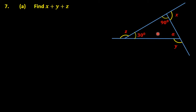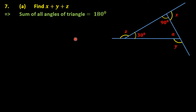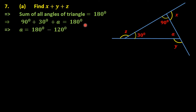Our first task is to find the third interior angle, which we represent as a. The polygon has three sides, so it is a triangle. Using the angle sum property of a triangle — the sum of all angles equals 180 degrees — we write 90 plus 30 plus a equals 180 degrees. Adding 90 and 30, then shifting to the right: a equals 180 minus 120 degrees.